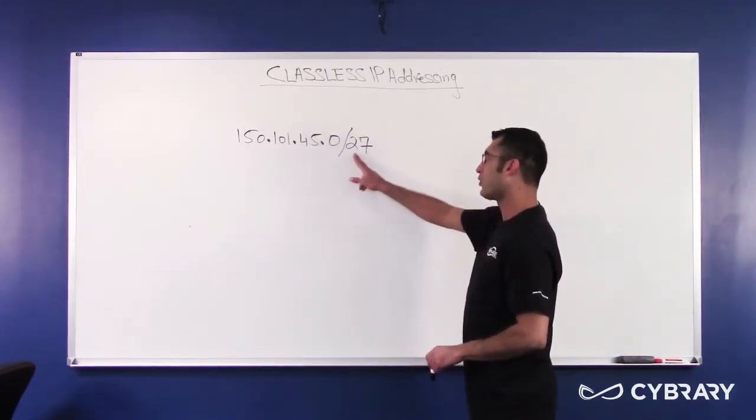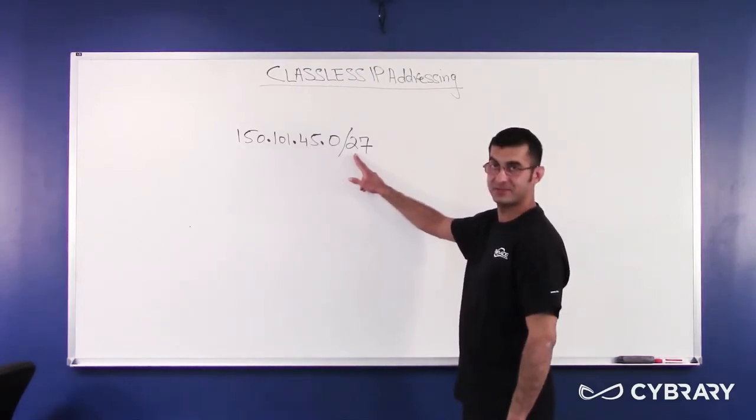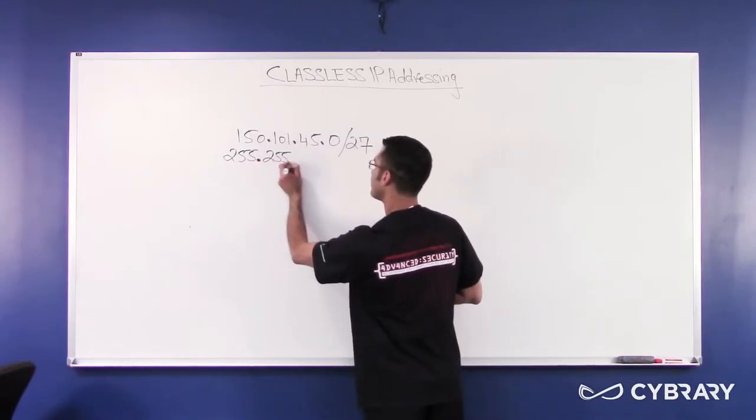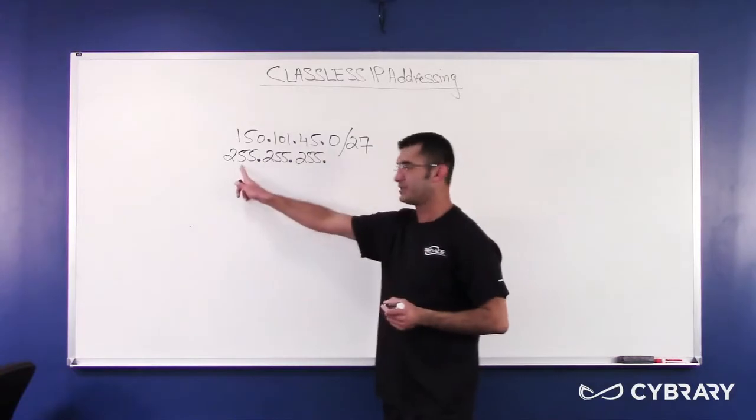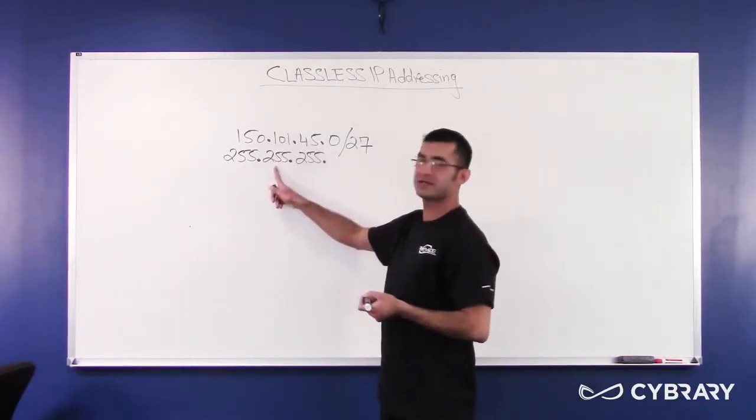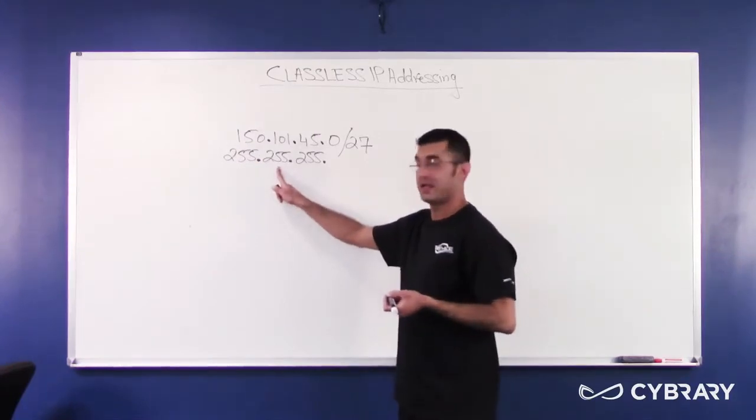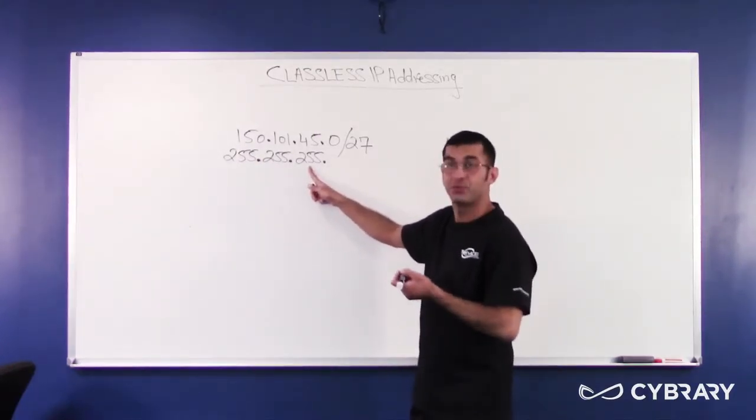Well, 24 bits are definitely turned on in the first three octets. So the first three octets would simply be 255, 255, and 255. So the first octet is all 1s, which gives me 8 bits. The second octet is all 1s, which gives me a total of 16 bits, 8 plus 8. And then the third octet is also all turned on, which gives me plus 8, 24 bits.